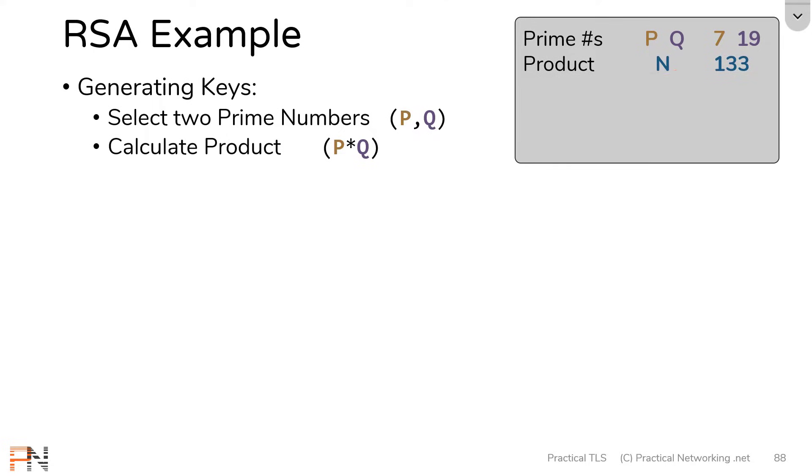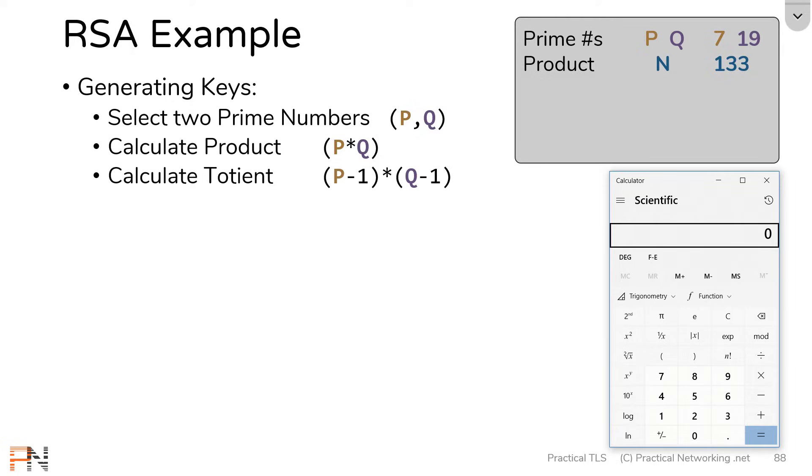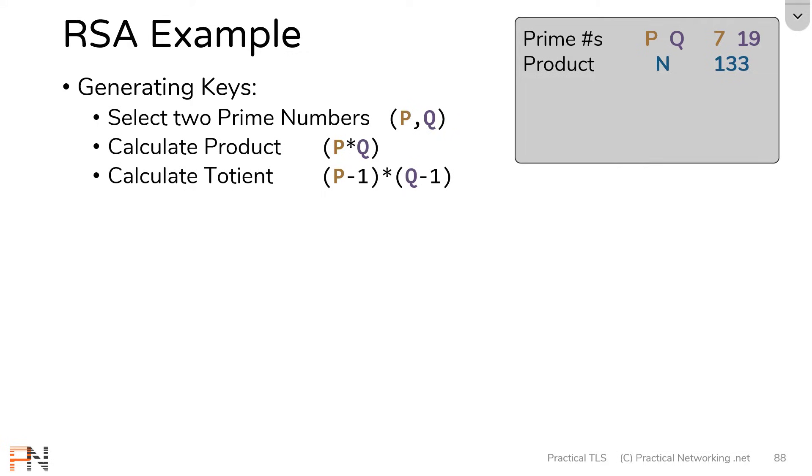We're going to call this value N. Now, given what we just discussed, can you identify what type of number 133 is? Hopefully you're able to put together that 133 is a semi-prime number, because the result of 133 came from multiplying two prime numbers. Next, we're going to calculate the totient. Now, the definition of the totient is actually pretty deep in the mathematics world. You have to understand things like Euclid's algorithm and the phi of N and a bunch of different things. I don't know math to that degree, but I do know that apparently to get the totient of a semi-prime number, all you have to do is subtract one from each of the primes and multiply them together. And this I can do pretty easily. So for us, our two prime numbers were 7 and 19, which means I'd be multiplying 7 minus 1, which is 6, times 19 minus 1, which is 18, and that'll get me 108. We're going to call this value T.